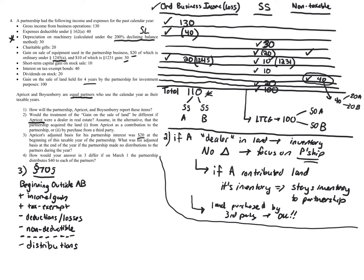For a calendar-year business, distributions occurring January 1st, March 1st, or December 31st are all considered happening at year-end, after processing all items during the year. In question three, there are no distributions, so we're just determining the basis from operations.